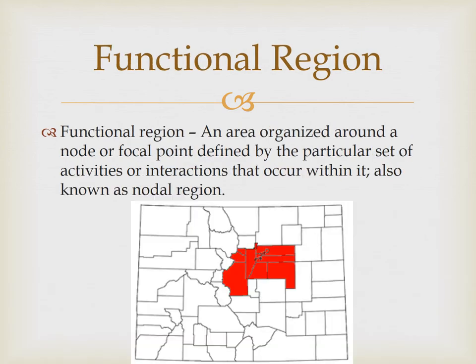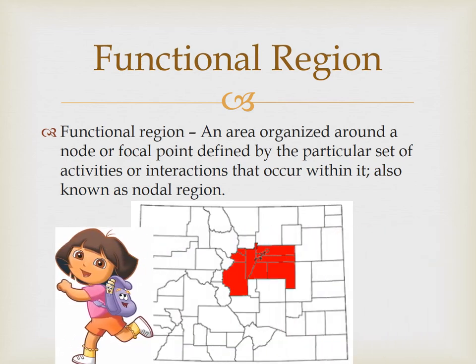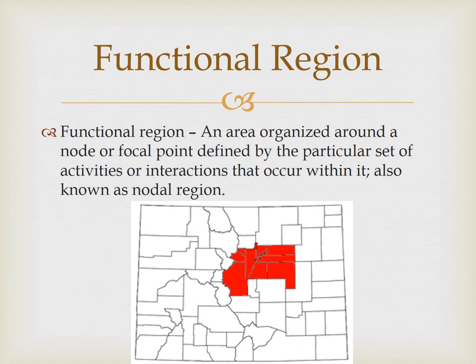A functional region is an area organized around a node or focal point defined by the particular set of activities or interactions that occur within it. It's also known as a nodal region. A node is a central point where functions are coordinated and directed around it. And since it's organized around a focal point or node, what do you think is the most ideal shape for a functional region? If you said a circle, you'd be right.